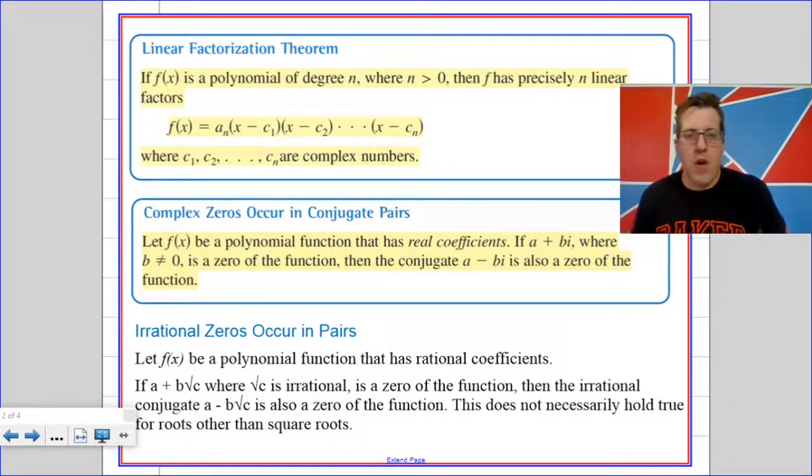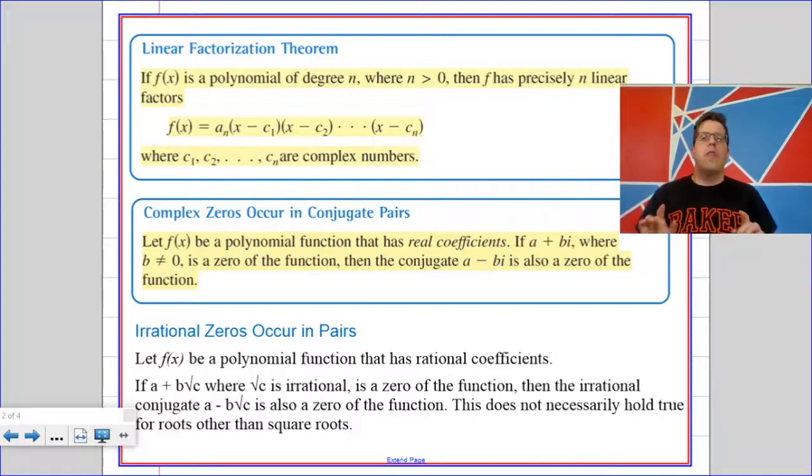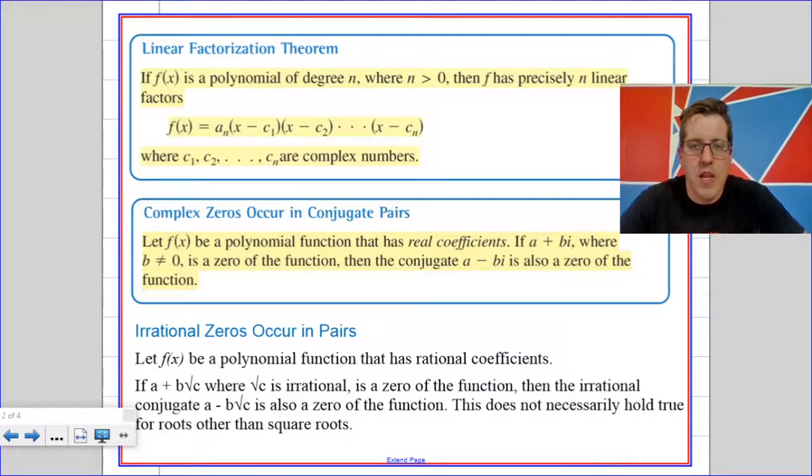Hey, I'm up here now. Okay, so that was an example of the linear factorization theorem. The linear factorization theorem tells us that we can always take a polynomial down to linears, but we might have to use imaginary numbers. On that particular one that we did, we were able to get all the way down to linears without using anything but integers. But you can always do it if you're willing to use imaginary numbers.